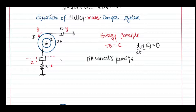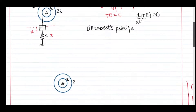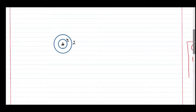We have to establish the relation between x, theta, and y. All three are considered generalized coordinates — the system can be expressed in terms of theta, x, or y. These coordinates are dependent, not independent. If I know x, I can write r·theta = x, so there is a relation. These are dependent coordinates.